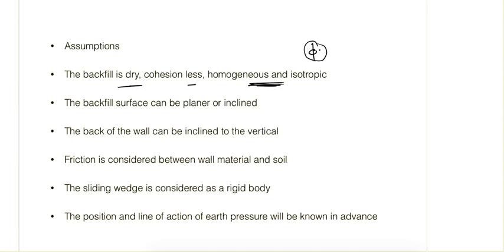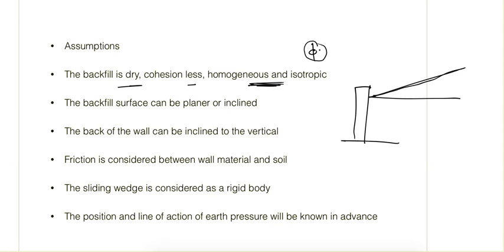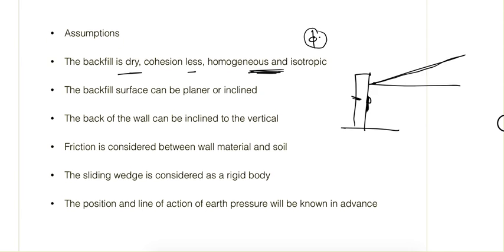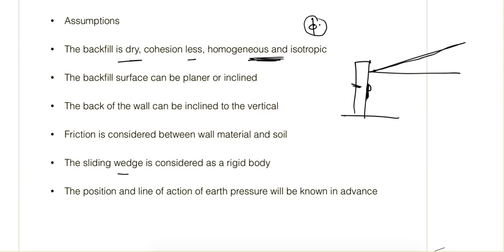The backfill surface can be planar or inclined — if this is the wall, the backfill surface can be horizontal or inclined. Friction is considered between the wall and the soil material, which is accounted for in this theory. The sliding wedge is considered as a rigid body, not in a plastic state.